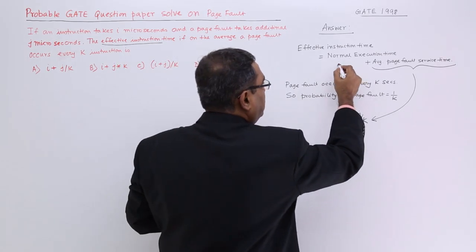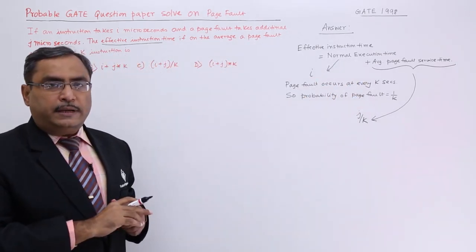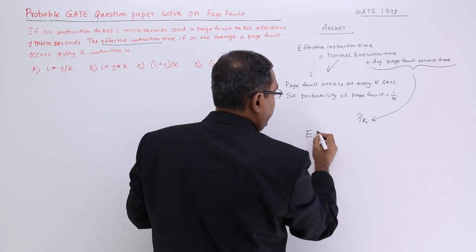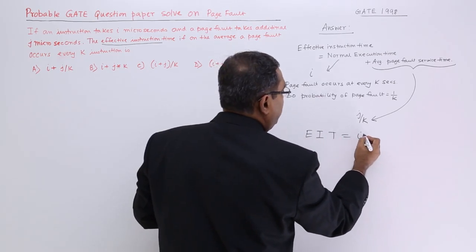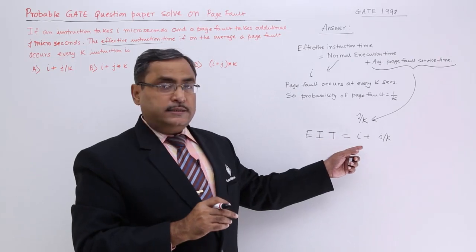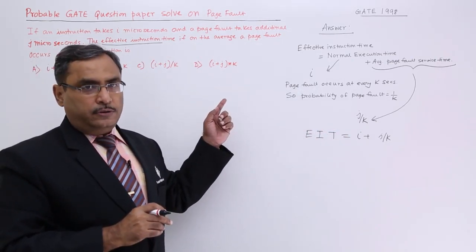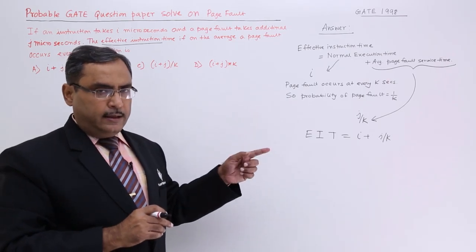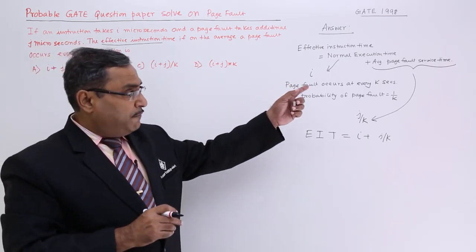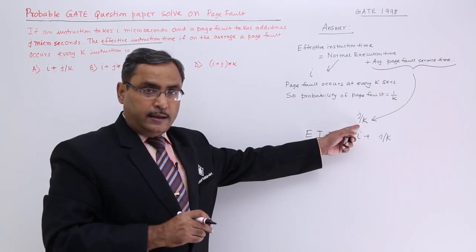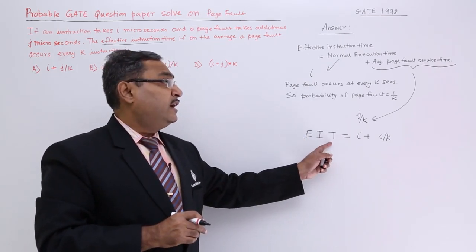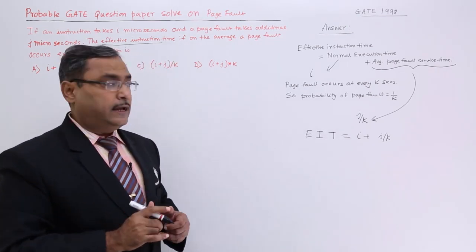The normal execution time is i microseconds. So the effective instruction time will be i plus j/k. Every k instructions there will be one page fault, so the page fault probability is 1/k and the page fault service time is j. Therefore, the average page fault service time is j times 1/k, and the effective instruction time is i + j/k.